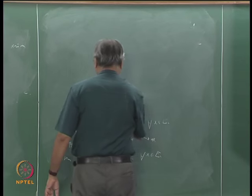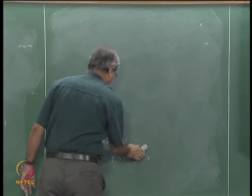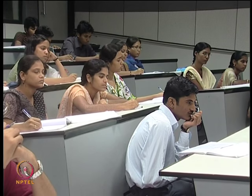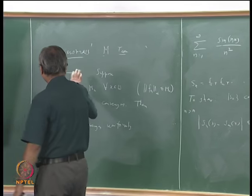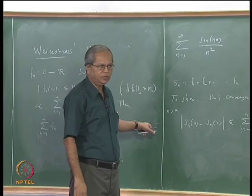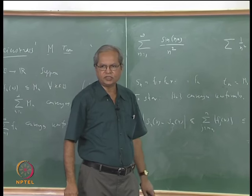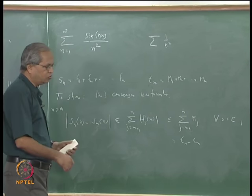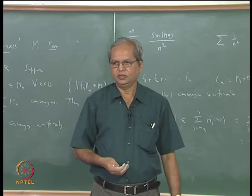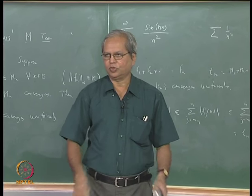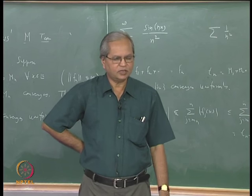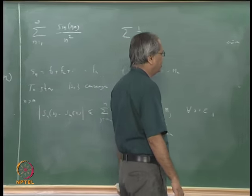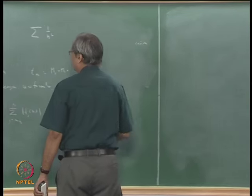So far we have discussed what is meant by uniform convergence of sequences or series, and how to check it using Cauchy's criteria and the Weierstrass M-test. The Weierstrass M-test is a very practical and useful test for checking uniform convergence of series of functions in many cases. Now let us go back to our earlier problem: if each f_n has certain properties, does the limit function f also have those properties under uniform convergence?